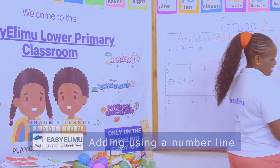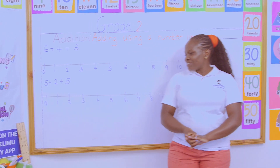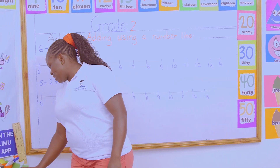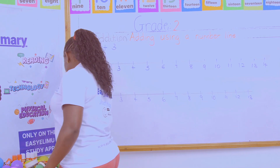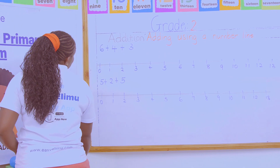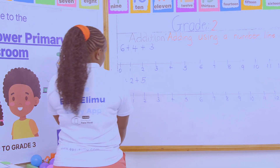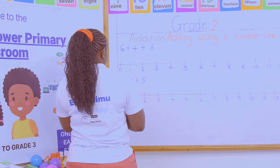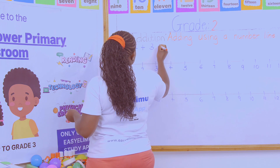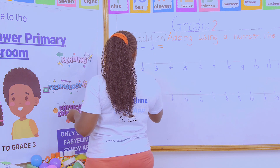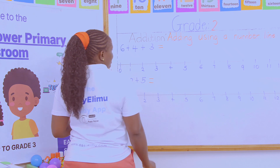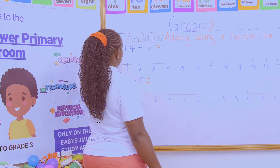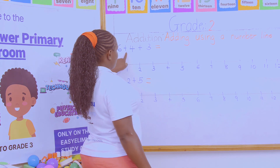Adding using a number line — again, yes, we still have so many additions using a number line. A number line is basically a line with numbers. We are now adding three single-digit numbers.